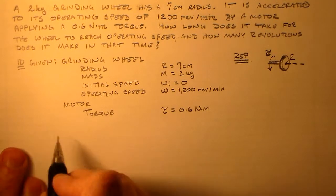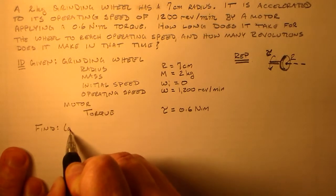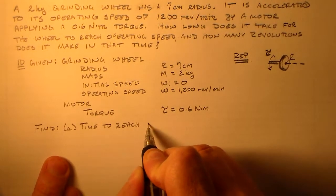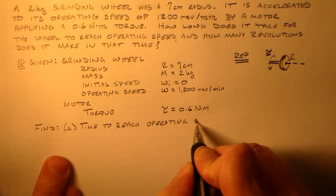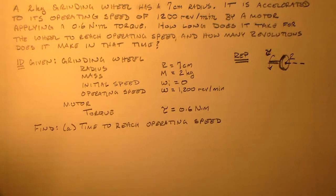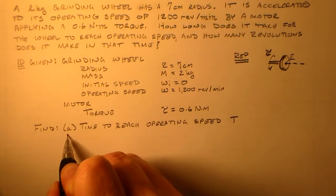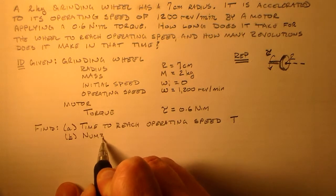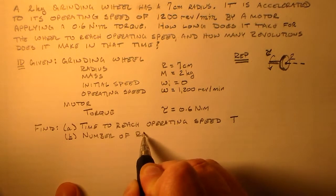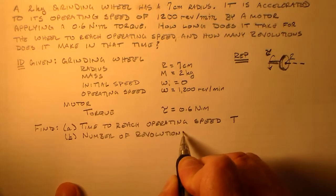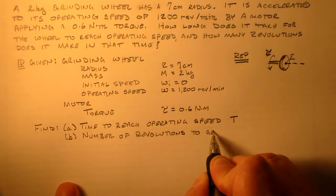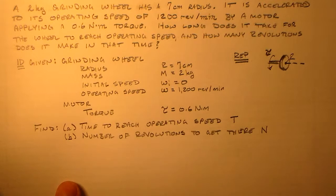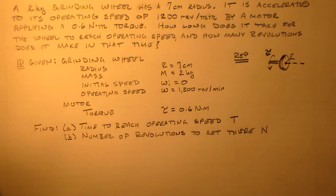Then I want to find two things. I want to find A, the time to reach the operating speed. To get full credit here, you need to name the variable, so I'll just use capital T. And then we also have this part B, which is I want to find the number of revolutions to get there, to get to that point. I'll give that capital N as the variable name. So that's what I've got for setting up the problem.